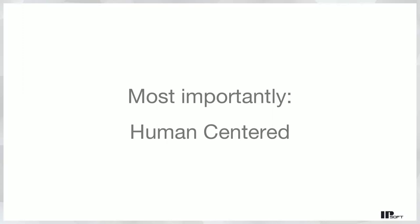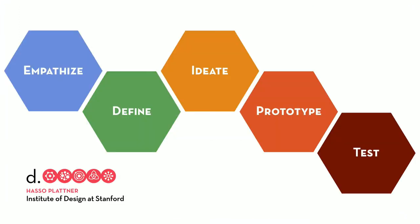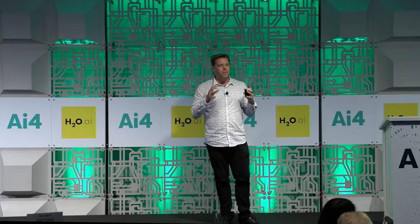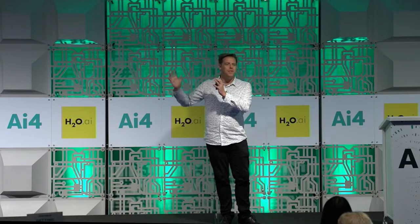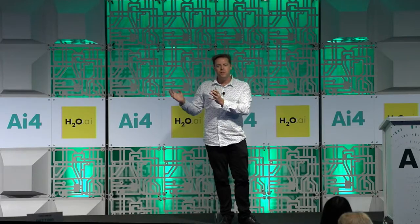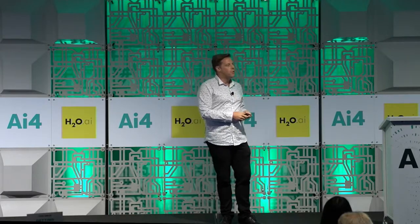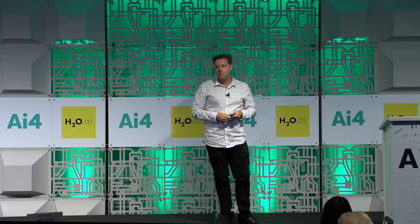Most importantly, it's about being human-centered. I do a lot of discussions about design thinking for AI. This is the d-school interpretation of design thinking. What's really important when we talk about conversational agents is that we're trying to bring an interface from something that is machine-centered — how you actually do something in the IT world — to being more human-centered. And that's everything I'll be talking about today.